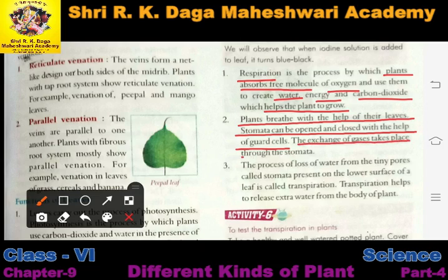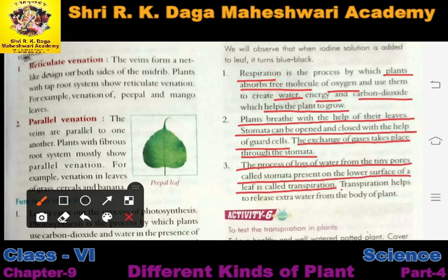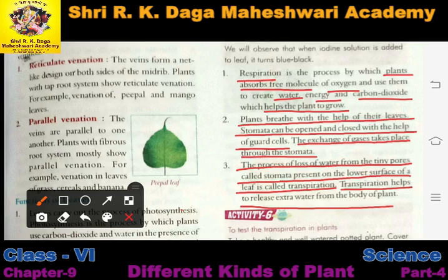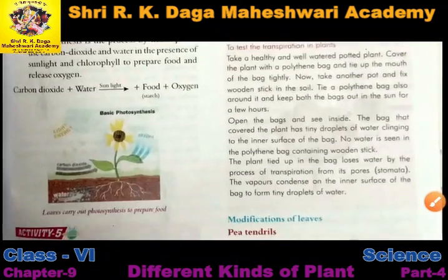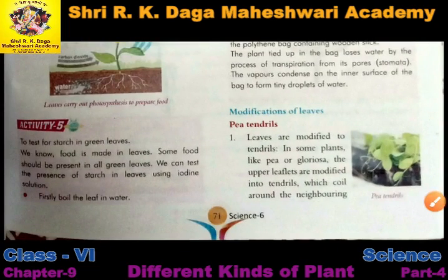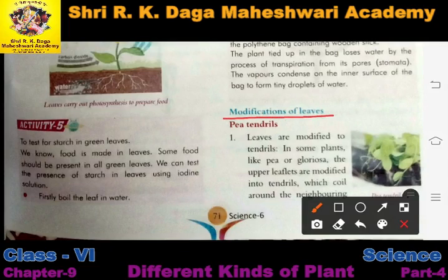The exchange of gases takes place through the stomata. Now, the process of loss of water from the tiny pores called stomata, present on the lower surface of a leaf, is called transpiration. Transpiration helps to release extra water from the body of the plant. The extra water from plants gets released through the plant leaves, and this process is called transpiration.